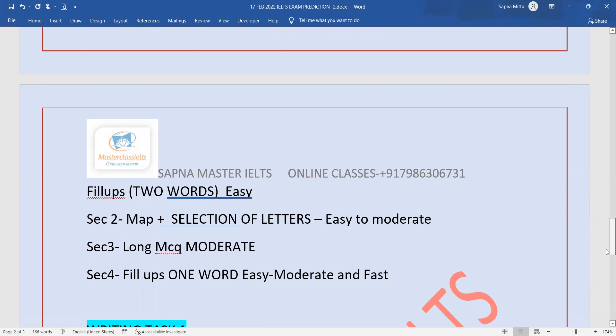Section 3 will be long MCQs, which are moderate level. Practice this more at 1.25 speed. Section 4 will be fillups, one word—it's a monologue. Do this carefully.